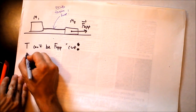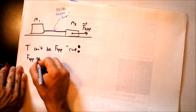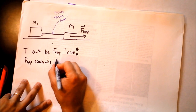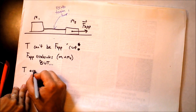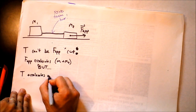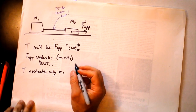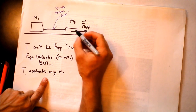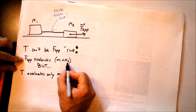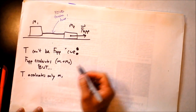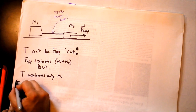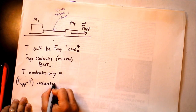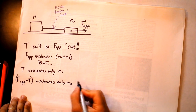To summarize: F_applied accelerates M1 plus M2, but T accelerates only M1. And the thing that's accelerating just M2 would be F_applied minus T. These are our initial thoughts as we look at the problem, but we'll have to work it out.